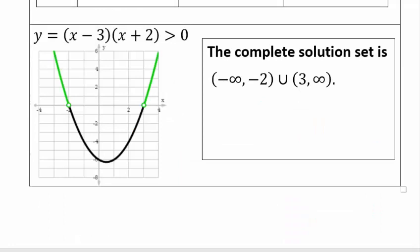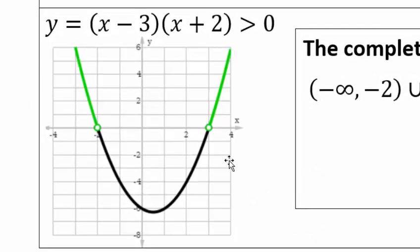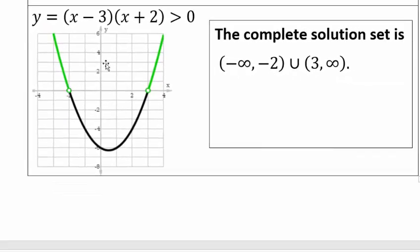Another way to solve this is graphically: look at y equals x minus 3 times x plus 2. It's a parabola, so negative 2 and 3 are x-intercepts where y equals 0 exactly — those points are not included. Since we want y greater than 0, we look for the part of the parabola above the x-axis. The x-coordinates for which y is positive are negative infinity to negative 2 and 3 to infinity, just like before. You can use either method to solve quadratic inequalities.